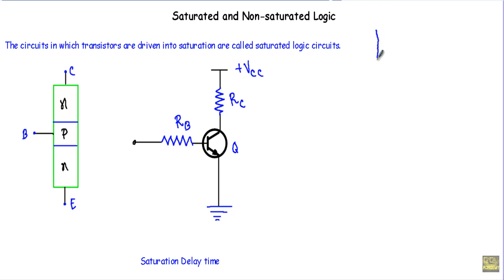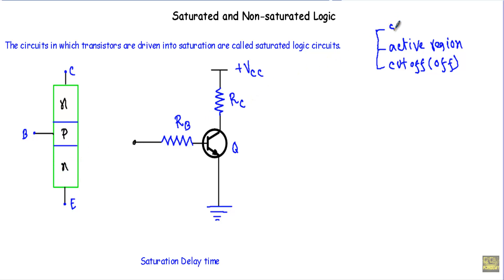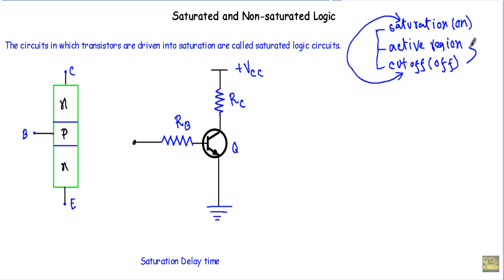A bipolar junction transistor has three regions of operation. First is cutoff mode, where the transistor is in a totally off state. Second is the active region, where not all carriers in the emitter terminal contribute in current conduction. Third is the saturation region, where the transistor is in a total on state. In saturated logic, the transistor switches between saturation and cutoff. In non-saturated logic, the transistor switches between active region and cutoff mode.